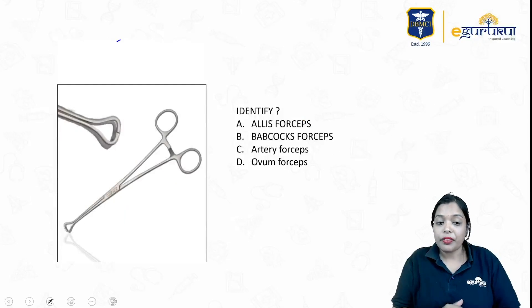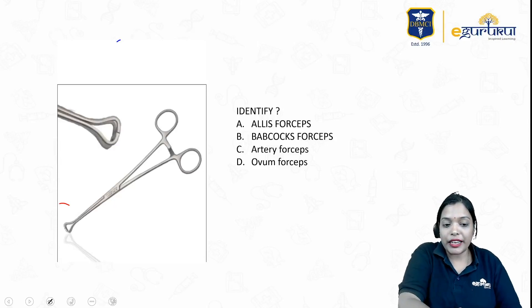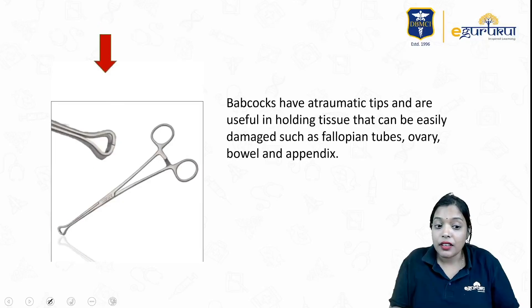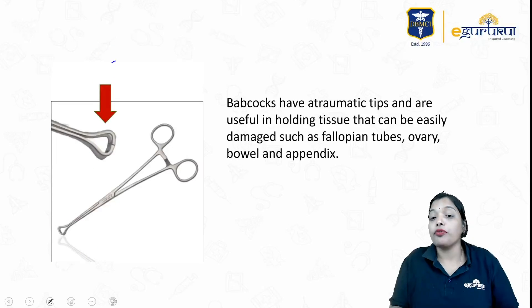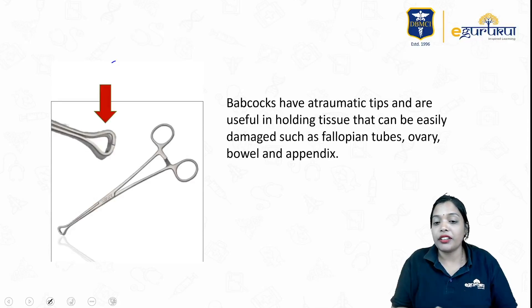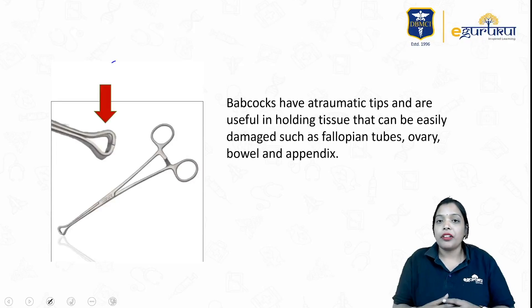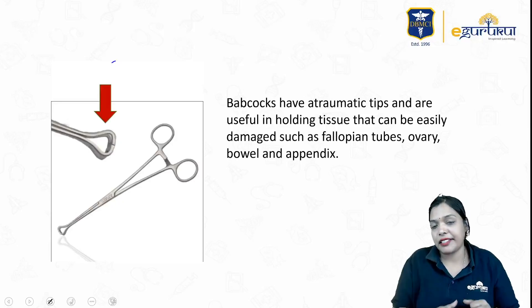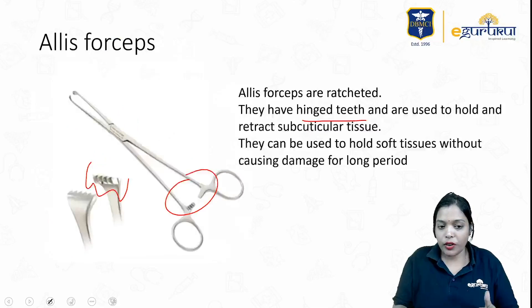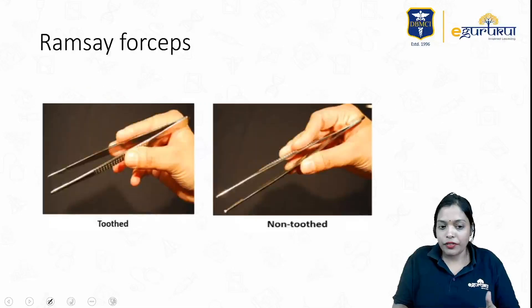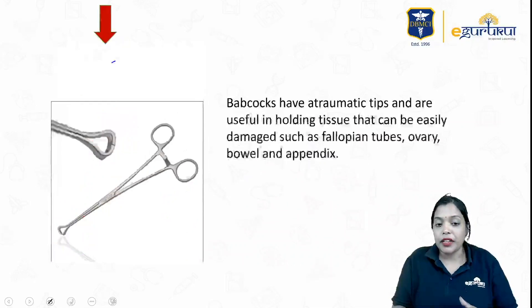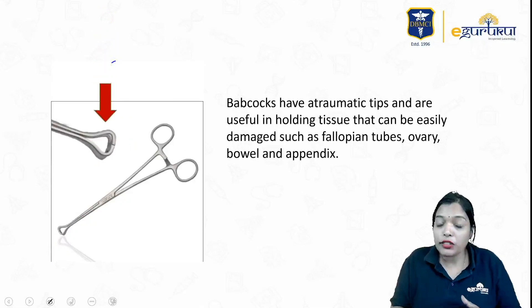This is an atraumatic forceps — you don't see any teeth here, and it is hollow. This is a Babcock forceps. It has atraumatic tips and is useful for holding tissues like the fallopian tube, ovaries, bowel, and appendix. So we have seen: needle holding forceps, Allis forceps, and Babcock forceps.